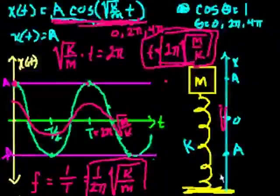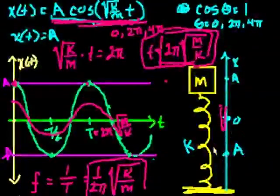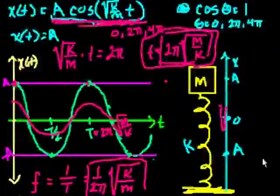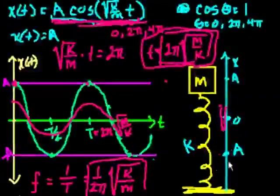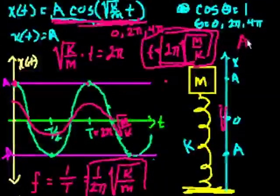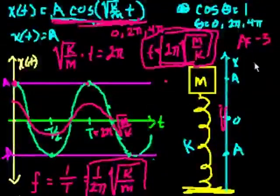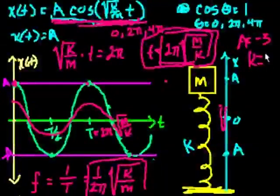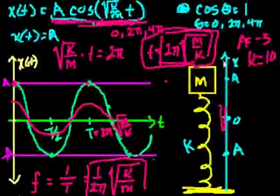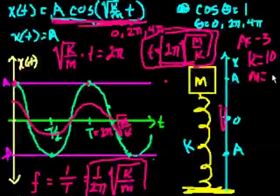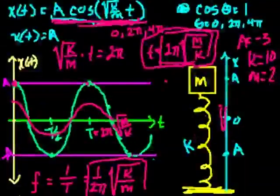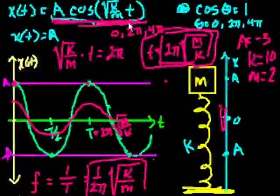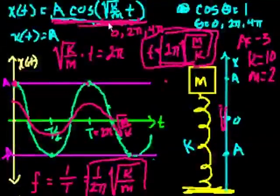And so if I just told you that I actually start having an object compressed, right? So in that case, let's say my a is minus 3. I have a spring constant of, let's say k is, oh I don't know, 10, and I have a mass of 2 kilograms.